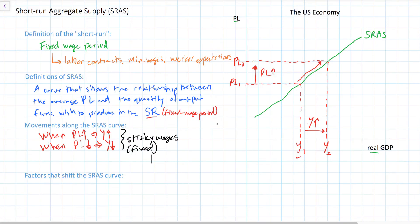Workers sign contracts that guarantee a fixed wage during the period they're under contract. There are minimum wages, and there are unemployment benefits that workers could receive from the government if they were to lose their job. For these reasons, firms are not easily able to simply lower wages when the prices of their goods are falling — therefore firms must reduce the number of workers they employ. At the same time, when prices rise, firms find that workers under contract will continue to get paid the same wage, so firms are incentivized to hire more workers and produce more output to take advantage of the higher prices.